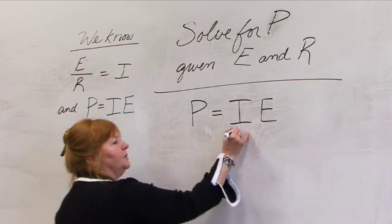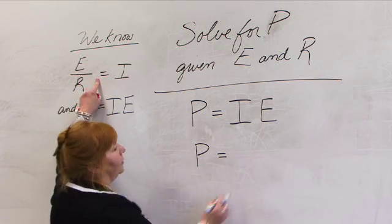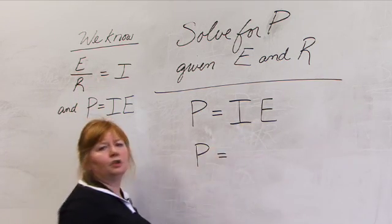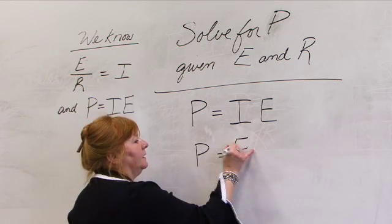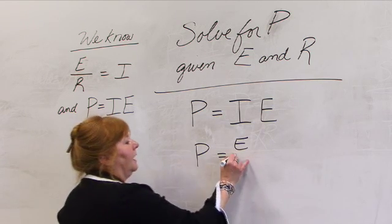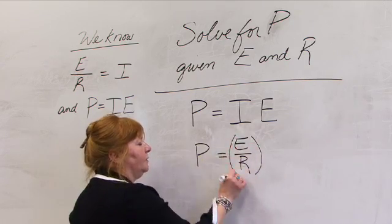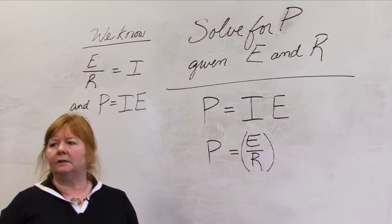So what we're going to do is we're going to take what we know and we're going to substitute into the formula another way to look at current using just E and R. If I take voltage and divide it by resistance, this is just another way to look at I, isn't it? E divided by R indeed gives us I.